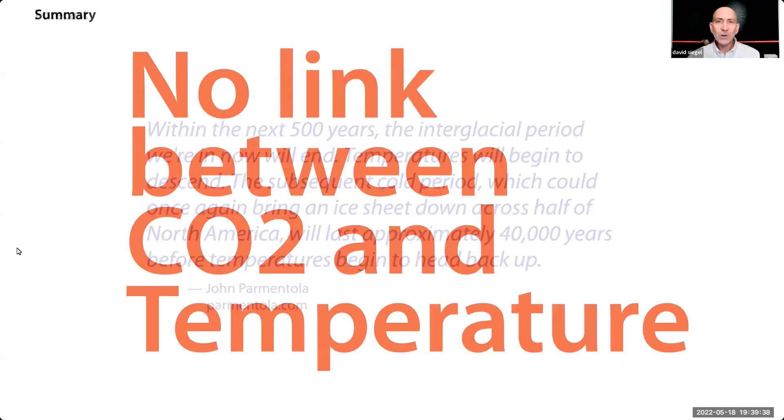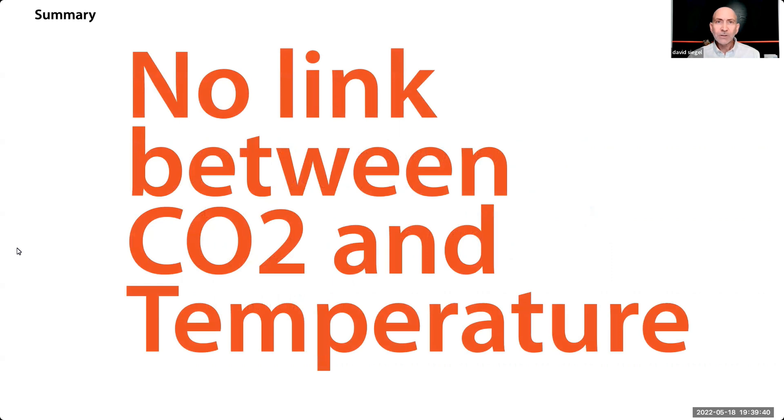In summary, there's no link between CO2 and temperature. Venus and Mars both have atmospheres of 95% carbon dioxide. The surface of Venus is 475 degrees Celsius. The surface of Mars is negative 65 degrees Celsius on average. The difference is the distance from the Sun.